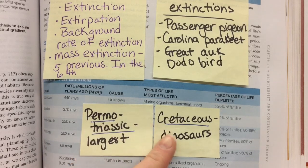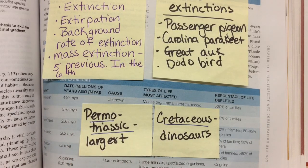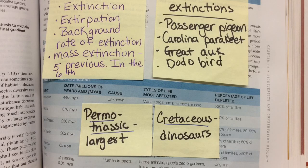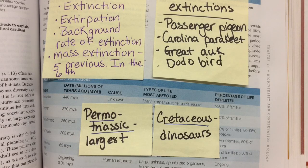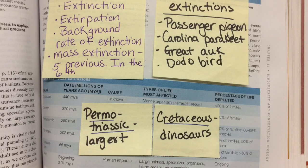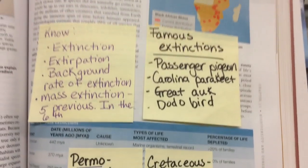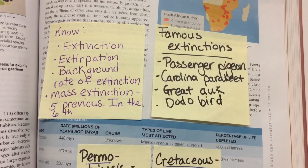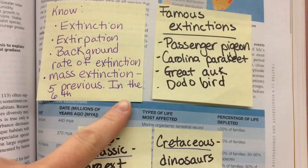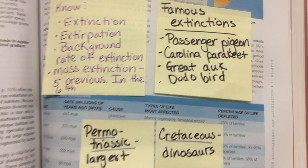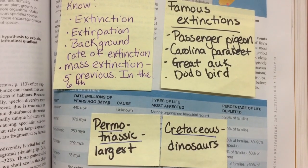The two previous mass extinctions you need to know: the Permo-Triassic was the largest mass extinction — that's the third one on the list — and the Cretaceous involved the dinosaurs, which was the fifth one. The rest of the list you don't need to know; these are just the two pieces of information you need.